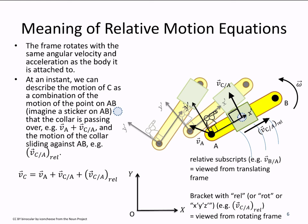At an instant, we can describe the motion of the collar C as a combination of the motion of the point on AB that the collar is passing over. So we can think of that as a sticker attached on AB plus the motion of the collar sliding against AB.